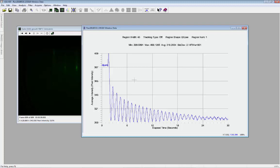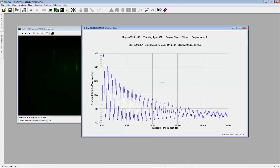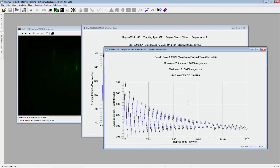I can specify the extents of the data to be fitted. In this case, I will select Set X Min to exclude the data at the start. From the Analysis menu, select Growth Rate Damped Sine Fit. This uses a least squares method to find the best fit to the displayed data. The graph shows the original data in black and the fit in blue.